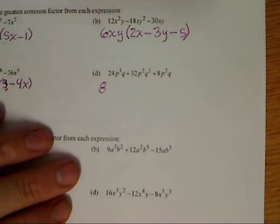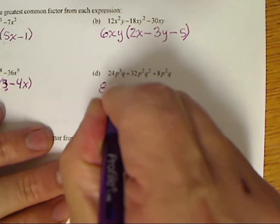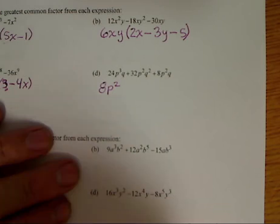Now look at my p's. Well, I've got p cubed, p squared, p squared, so they all have at least a p squared. Look at my q's. I've got q, q squared, and q. So I can take out a q.